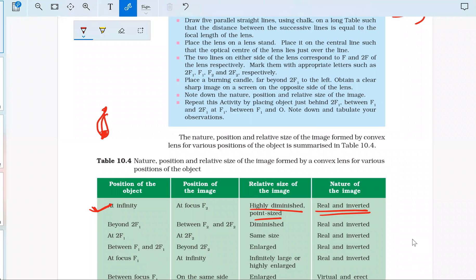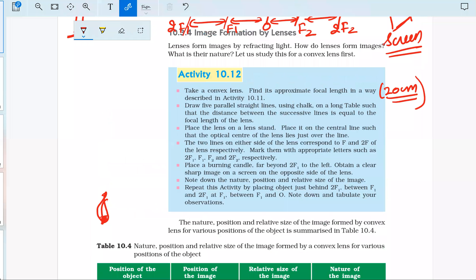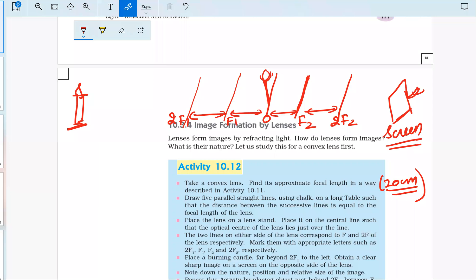When the object is placed beyond 2F1, the image will be formed between 2F2 and F2. So when you bring the candle closer, beyond 2F1, the image will be formed between F2 and 2F2.